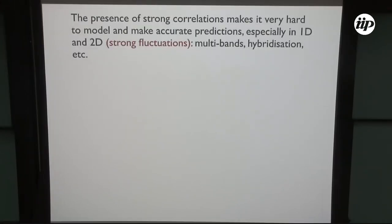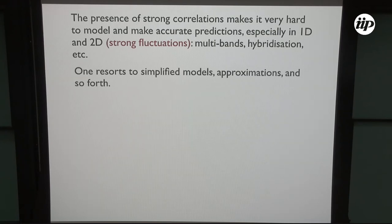Strong correlations make it very hard to model and to make accurate predictions, especially in low dimensions due to strong fluctuations. Things get worse if you introduce multiple bands, hybridization, and so on. So one resorts to simplified models, approximations, and further simplifications.